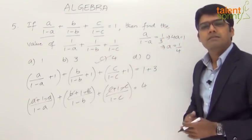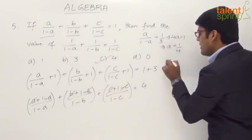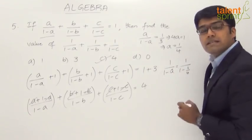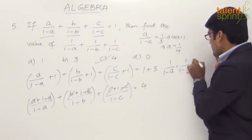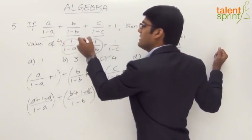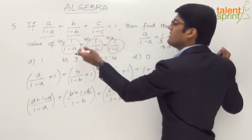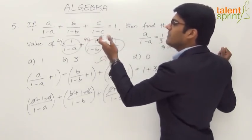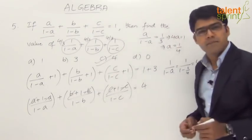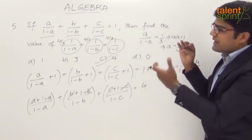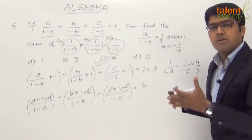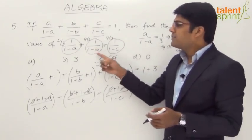Now substituting into the required expression: 1/(1−a) = 1/(1 − 1/4) = 1/(3/4) = 4/3. Since a = b = c = 1/4, each of the three terms equals 4/3. So 4/3 + 4/3 + 4/3 = 12/3 = 4, which is option C. Either follow the componendo method or substitute values through logic — both approaches give the required answer of 4.